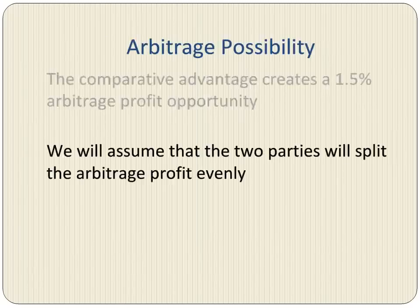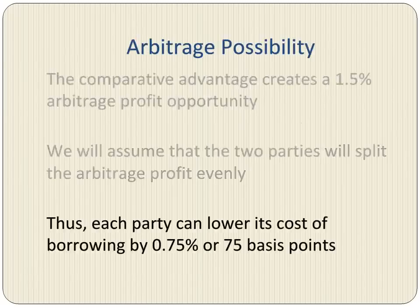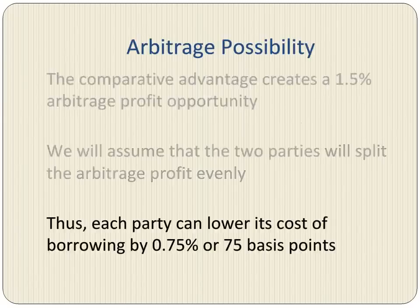The two companies can then split the 1.5% in the proportion they agree upon. In this example, we are assuming that they will split the 1.5% evenly. Thus, each party can lower its cost of borrowing by 0.75%, or 75 basis points. We have to keep in mind that if the two parties had the same credit rating, the arbitrage possibility would not exist.